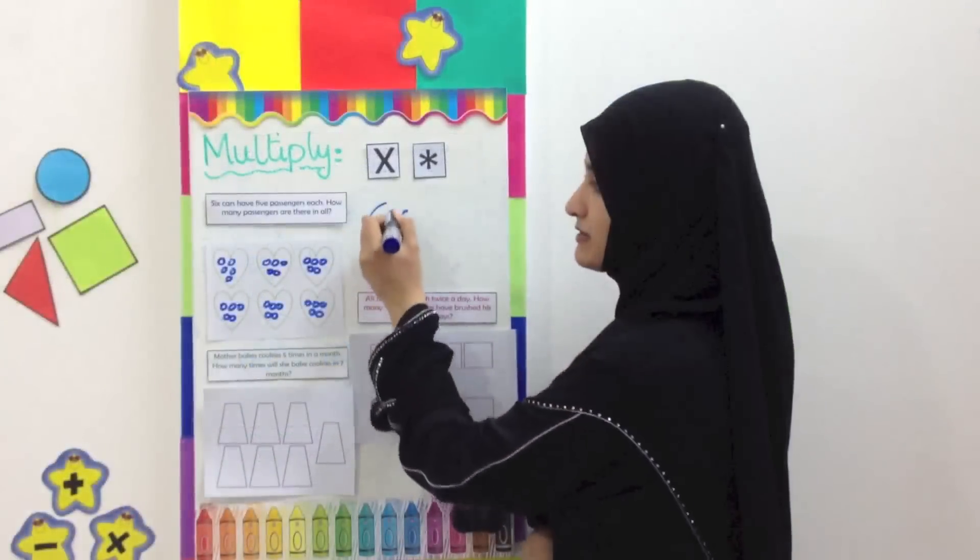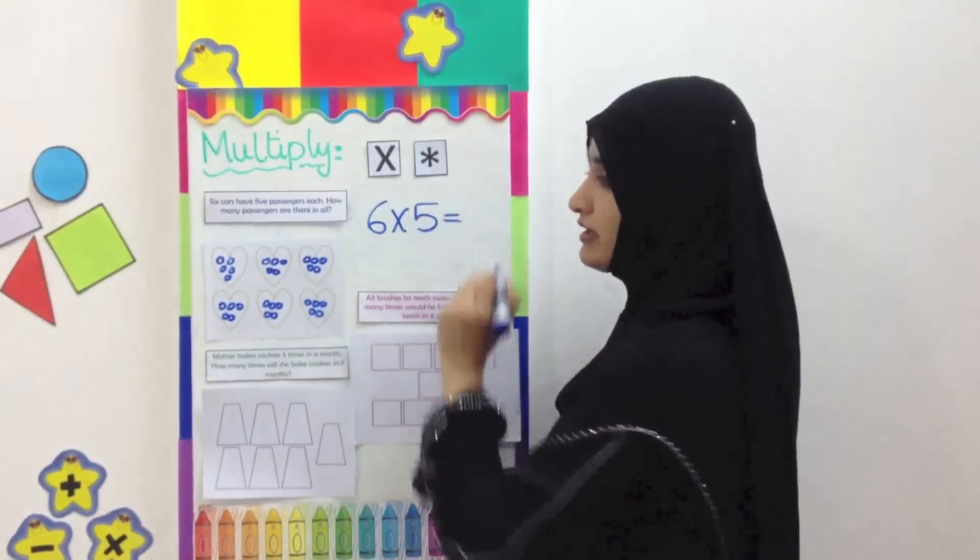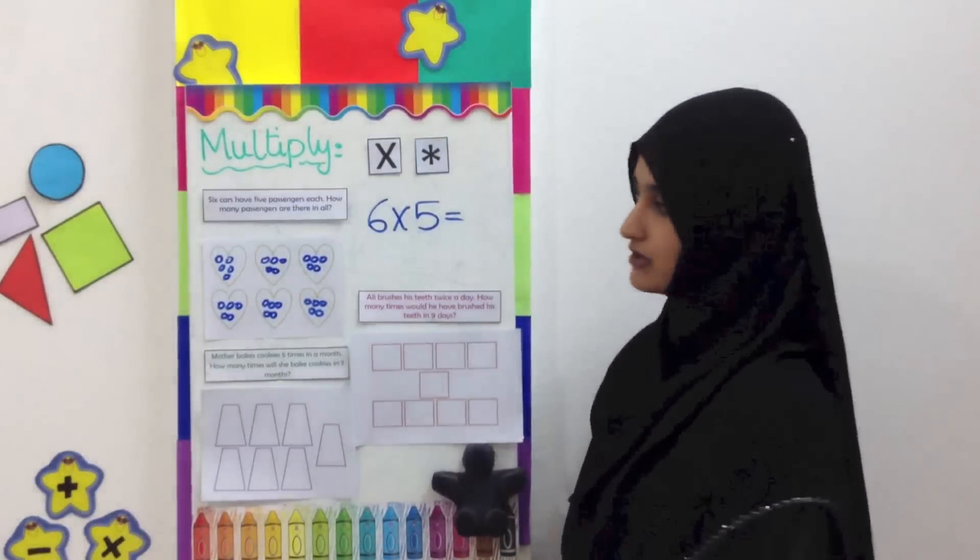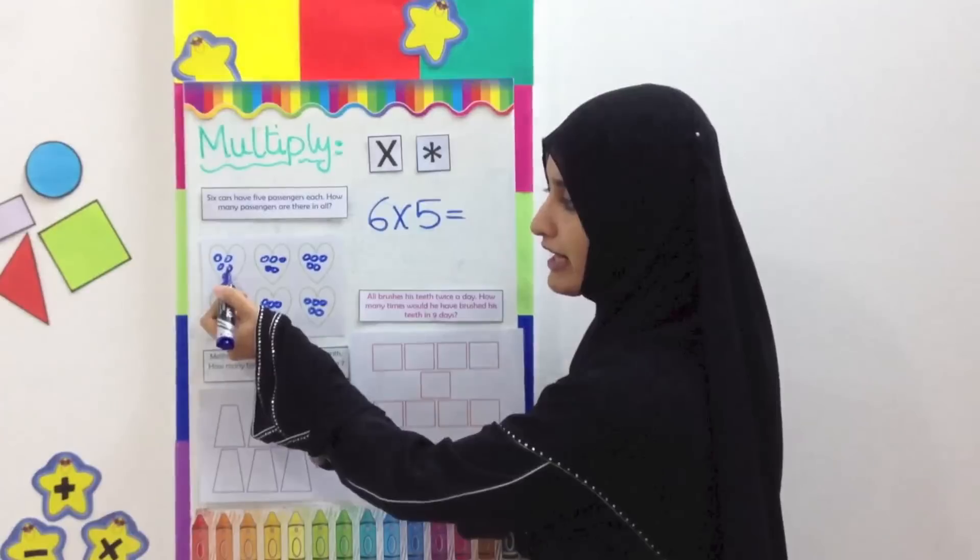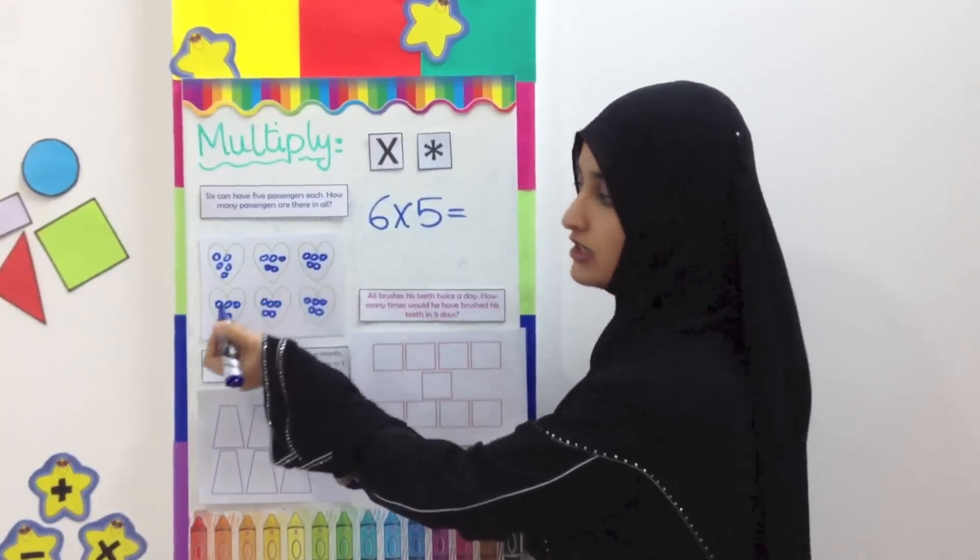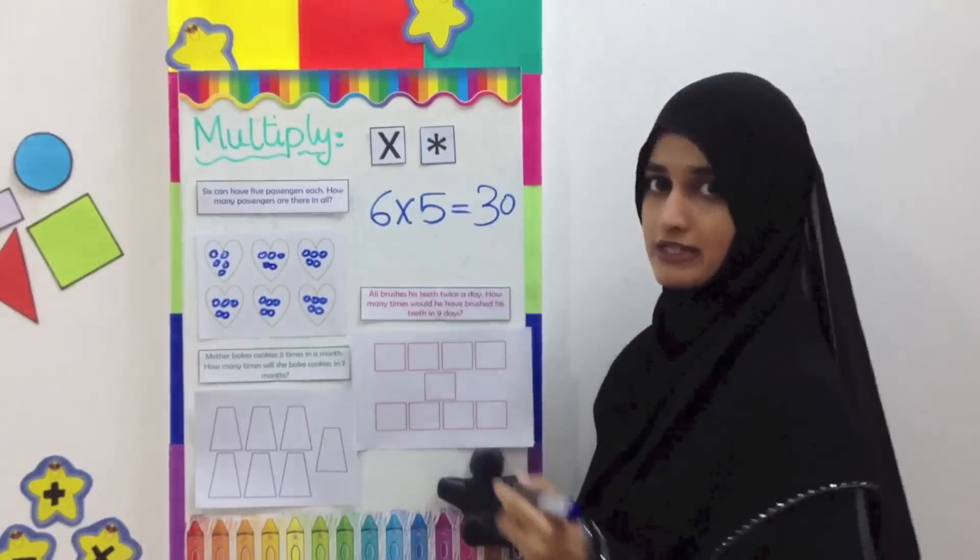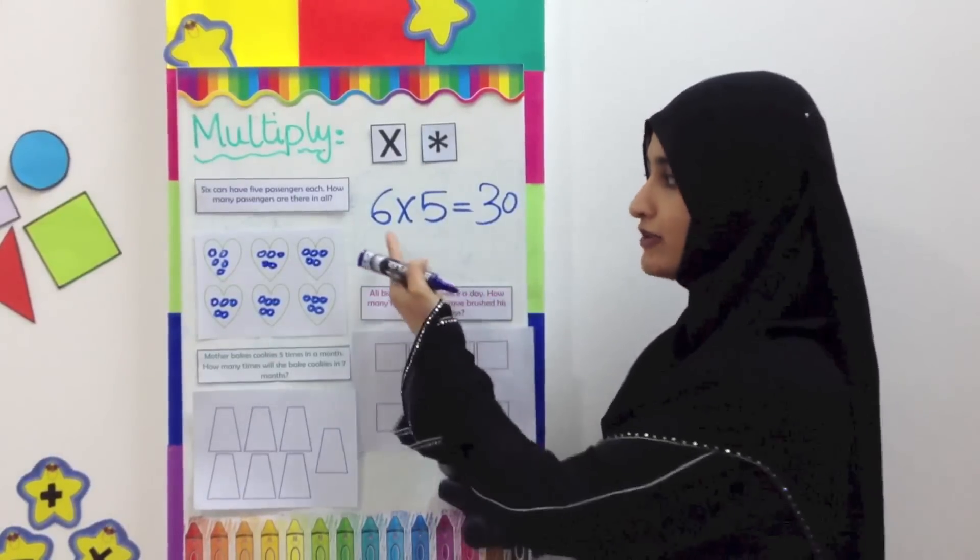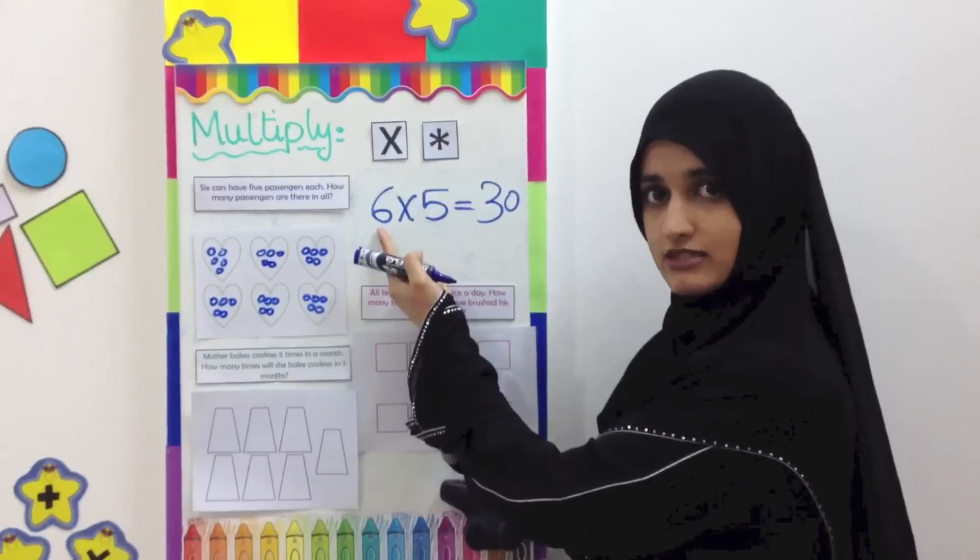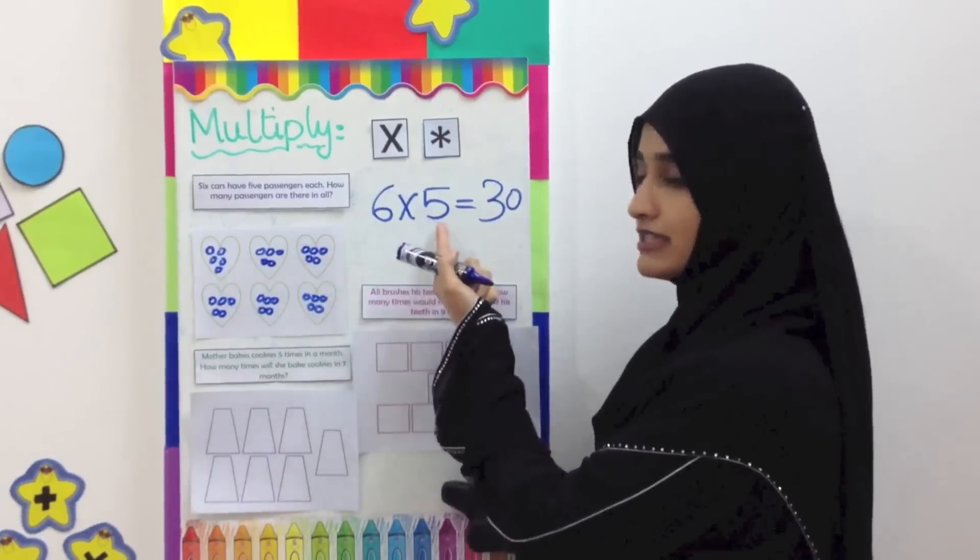So six times five equals... now we need to count. Count in fives: five, ten, fifteen, twenty, twenty-five, thirty. So we have thirty passengers in all. The first number is the number of sets - we have six sets.